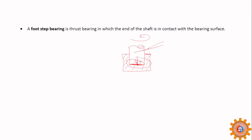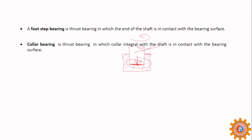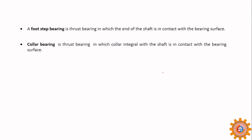There is another type called a collar bearing. A collar is provided on the shaft, and in some cases the collar is provided within the housing itself. This is a single collar bearing; when multiple collars are used it is a multi-collar bearing. This also comes under journal bearing.